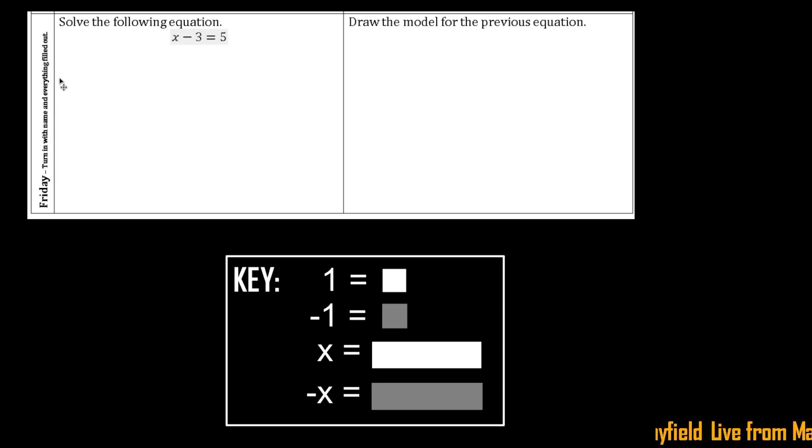Just like yesterday we're going to solve the following equation and you're going to set it up like you normally do, but also you want to make sure you can draw that model. So let's do the first step here. It says solve the following equation and it has x minus 3 equals 5.